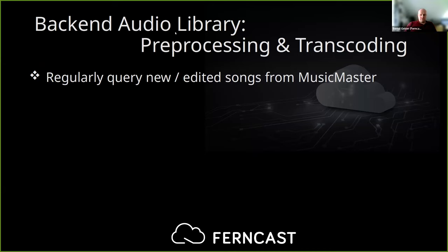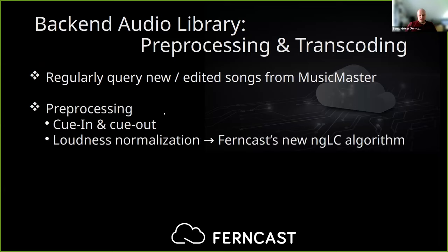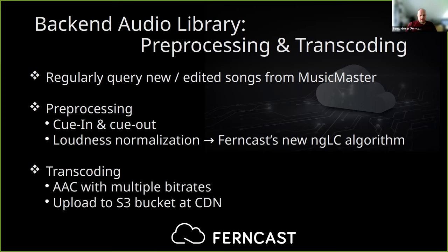The first step is to create the backend audio library through pre-processing and transcoding. We regularly query the Music Master database for new or updated songs and apply pre-processing: we cut away the start and end as configured by Classic Radio, then do a loudness normalization using our new next generation loudness control algorithm — NGLC — which I'll go into in detail very soon. The second step after pre-processing is of course transcoding — AAC with multiple bitrates — then upload to S3 buckets.